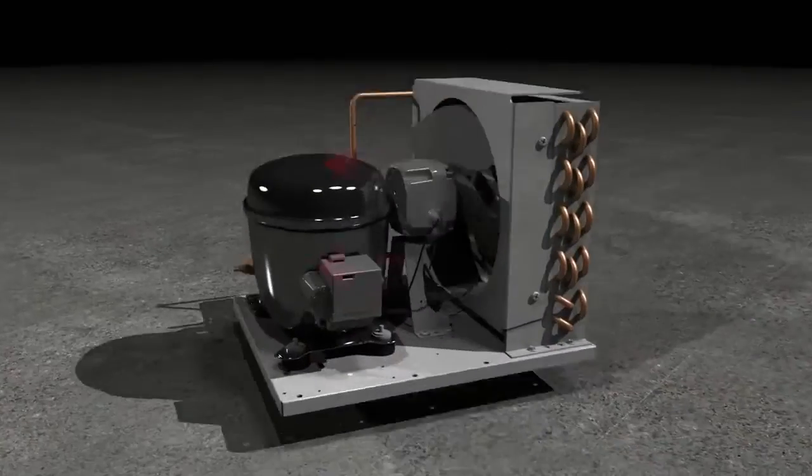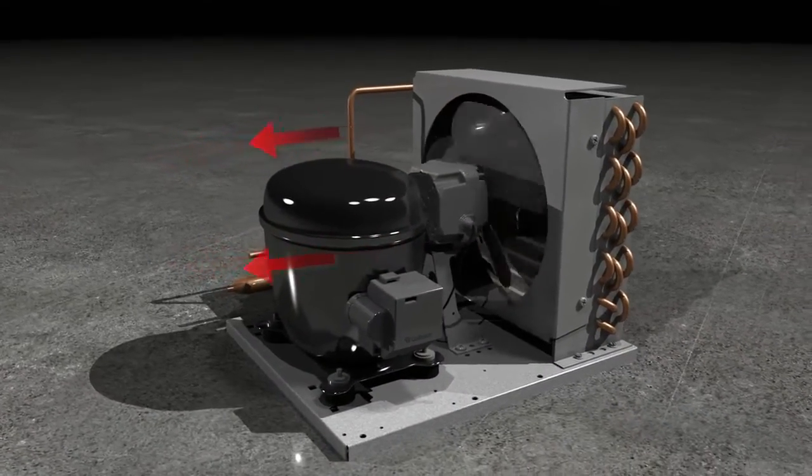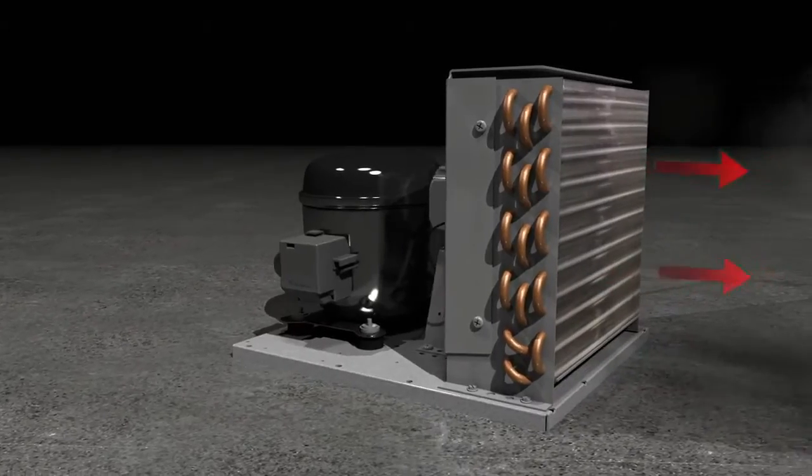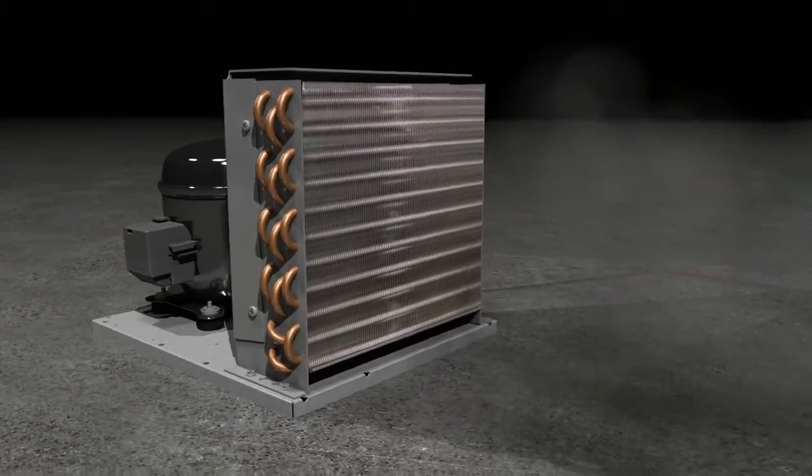RCU technology reverses the direction of the condensing fan motor upon each compressor startup. The fan motor will then help blow off excess dust, dirt, and debris from both the interior and the surface of the condensing coil.